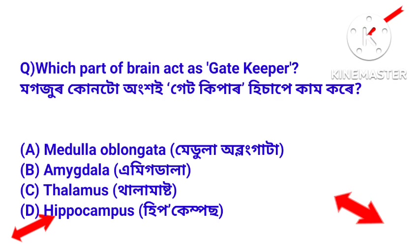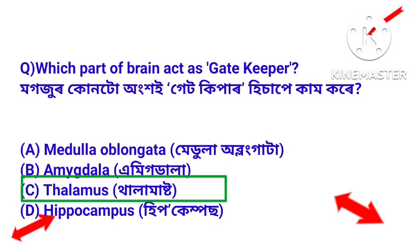Next question: which part of the brain acts as a gatekeeper? Mokhozur ghet kipar hisa pe kama kore? Answer: Thalamus. The thalamus is the part of the brain that acts as a gatekeeper.